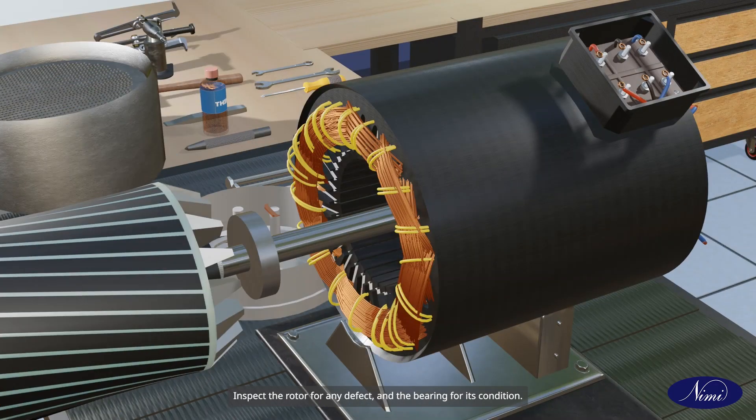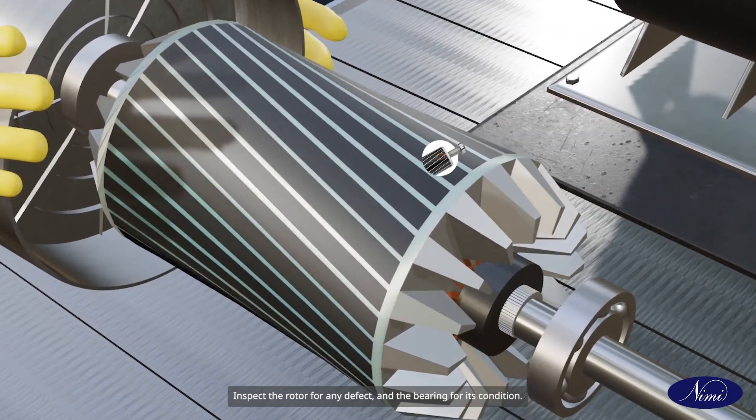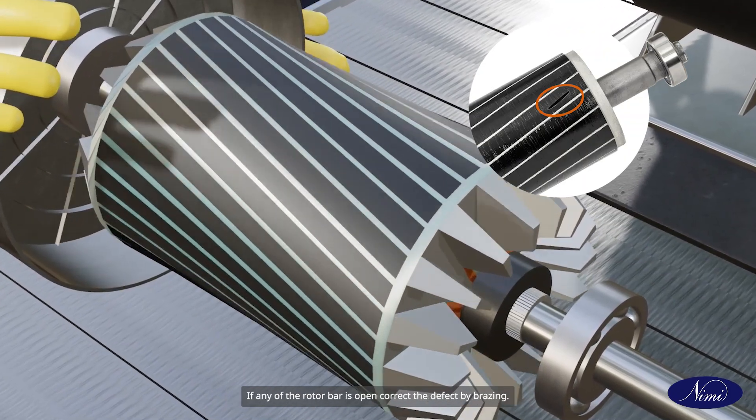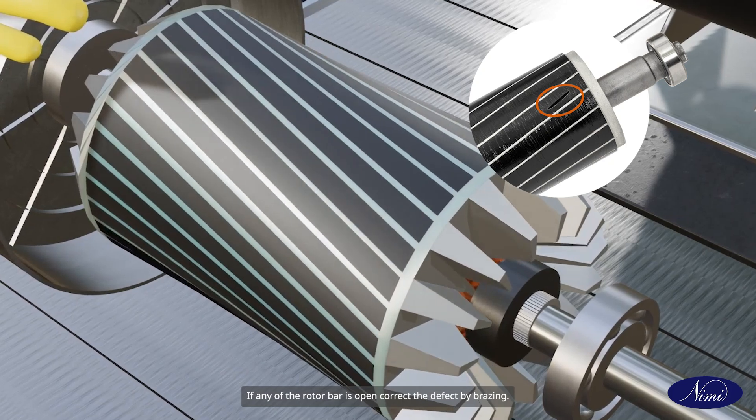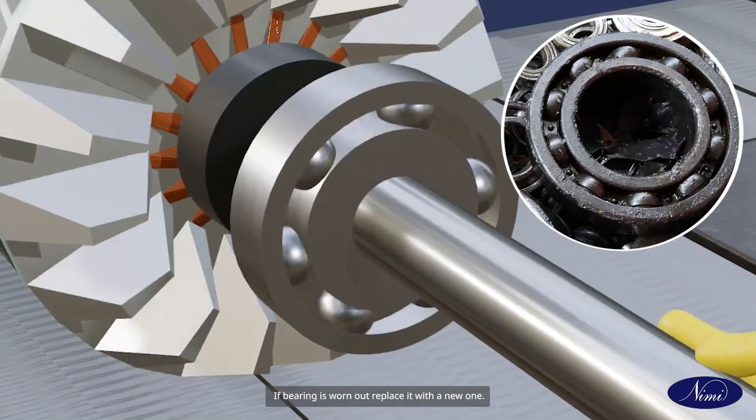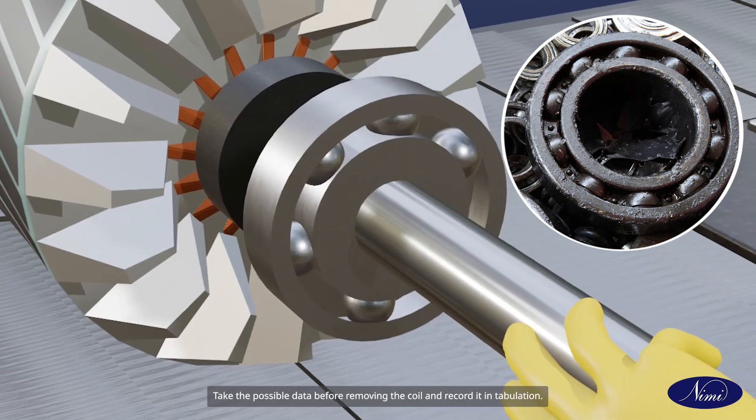Inspect the rotor for any defect and the bearing for its condition. If any of the rotor bar is open, correct the defect by brazing. If bearing is worn out, replace it with a new one.